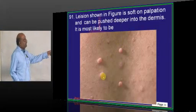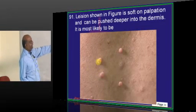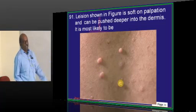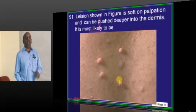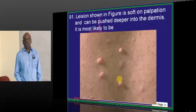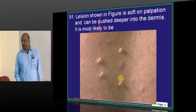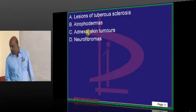Then, there is a lesion which is soft on palpation and it can be pushed deeper into the dermis. What is it basically called? Button hole sign, which is typical of neurofibroma.